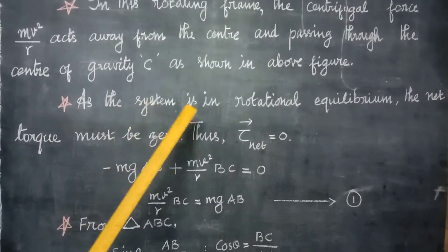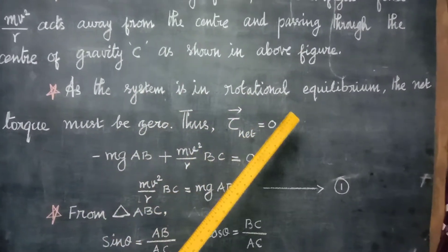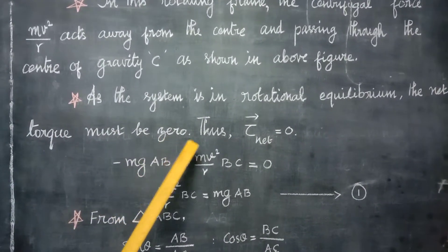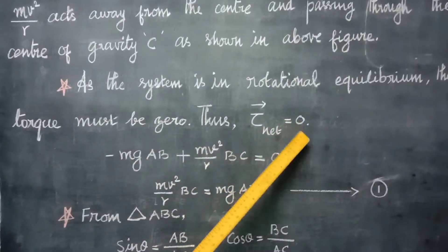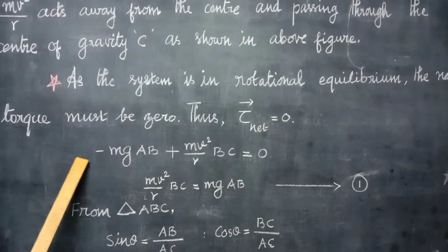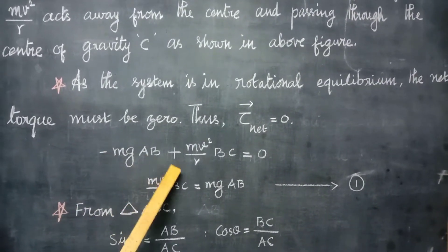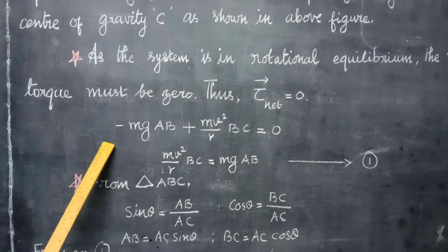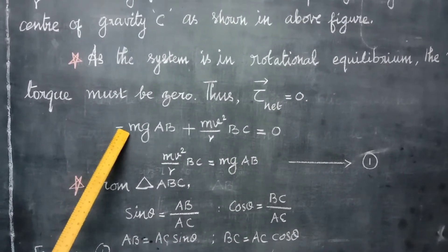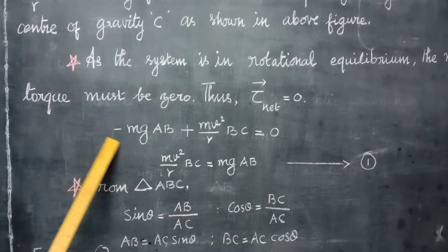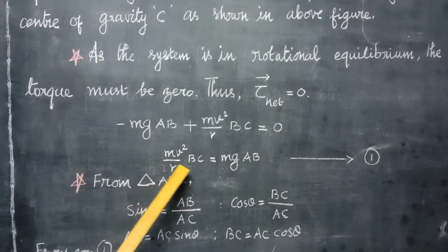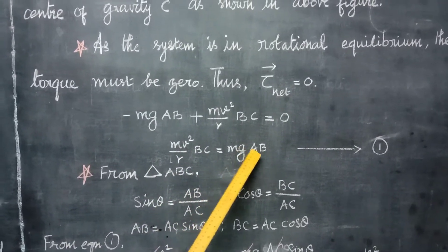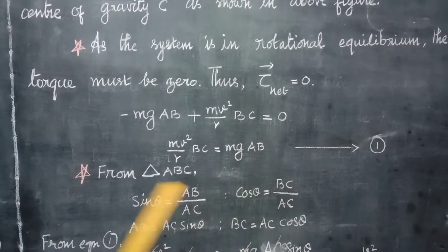As the system is in rotational equilibrium, the net torque must be zero. Thus: −Mg·AB + Mv²/R · BC = 0, which gives Mv²/R · BC = Mg · AB. This is equation 1.